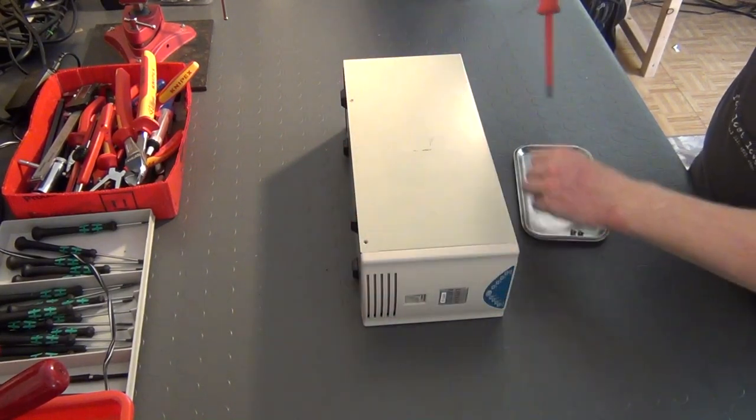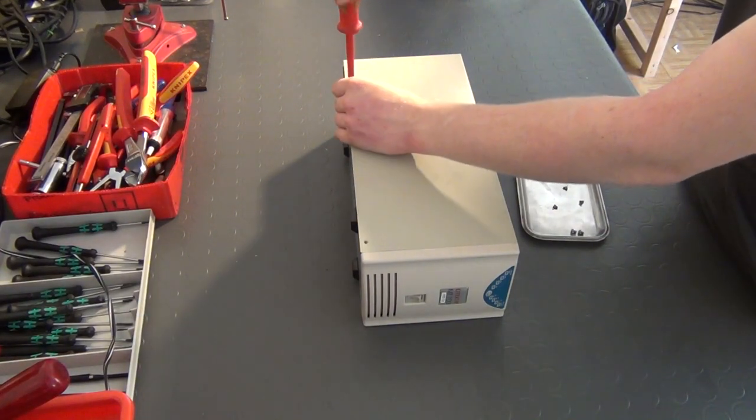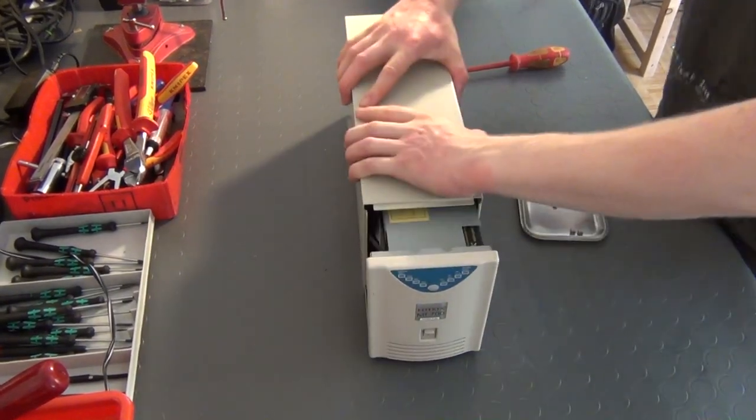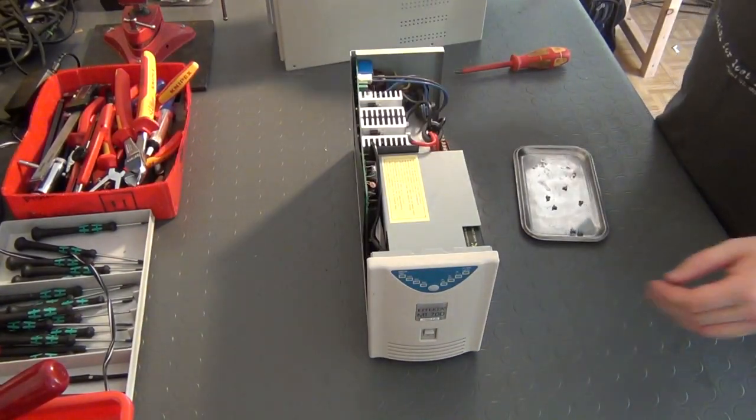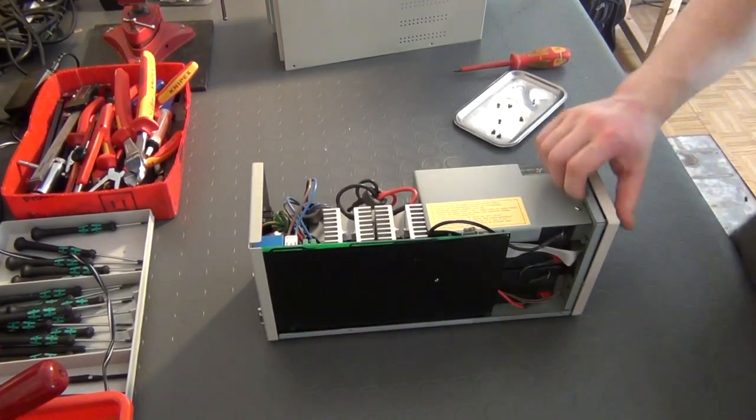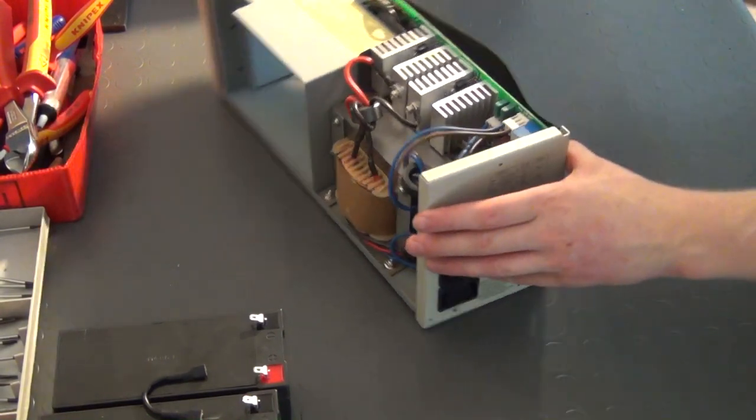By simply not connecting the UPS to the power grid, you can virtually simulate a power outage. Once you connect some batteries to it, the inverter will automatically kick in. Therefore, you can use the UPS as a general purpose inverter.